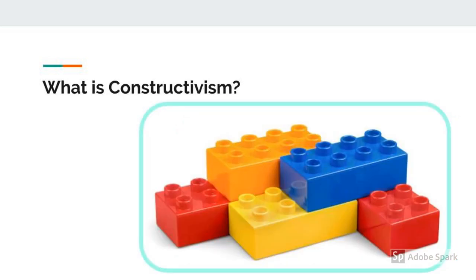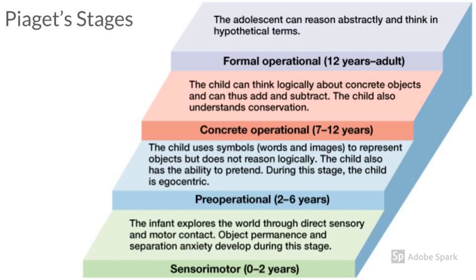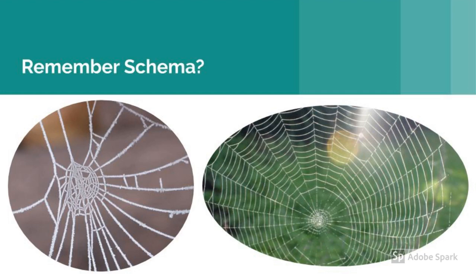Constructivism might be the most widely known theory of development. This one was developed by Jean Piaget. He characterized the development of all children as going through four discrete stages as they construct knowledge. Piaget's stages were bounded by chronological years, and he believed that all children went through these stages in this order. Piaget described learning, or schema development, through two processes: the first is assimilation, in which children understand their environment in terms of existing cognitive structures or things they already know; and the other is accommodation, which involves changing cognitive structures to make sense of new observations of the environment.